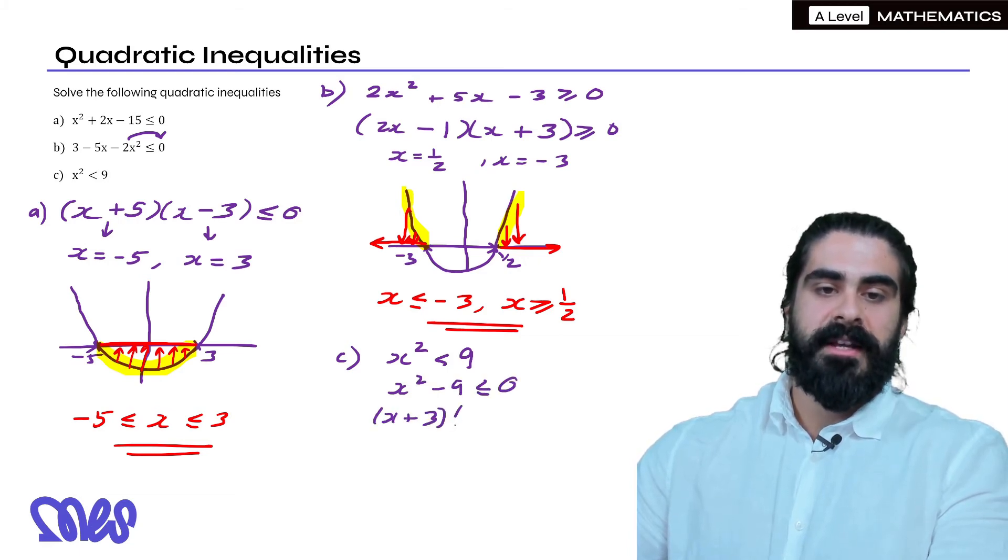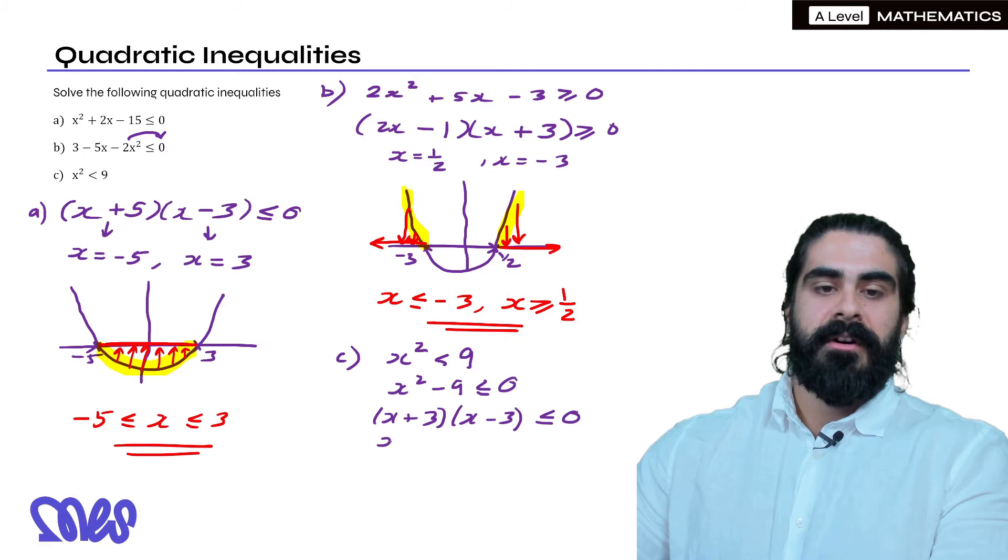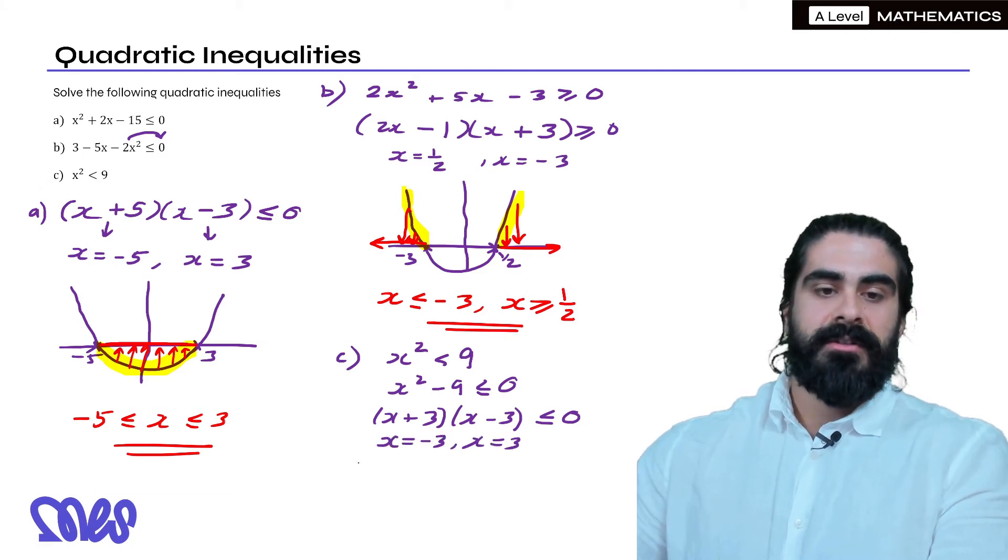It's difference of two squares: x plus 3, x minus 3 is less than or equal to 0. So your roots here are x equals minus 3 and x equals 3. So we sketch that.